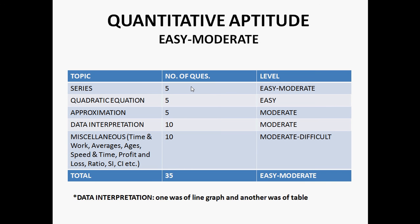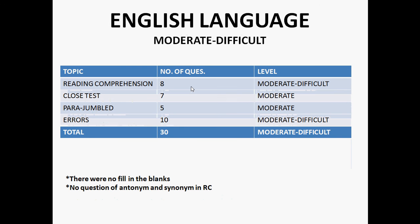Overall, quant was easy to moderate. English language level was moderate to difficult - it was a bit more difficult than the other two sections. There were eight questions from reading comprehension which was moderate to difficult, seven from cloze test which was moderate, five from para jumble, and ten from errors. Both para jumble and errors were moderate to difficult.